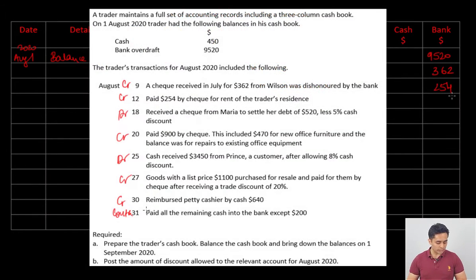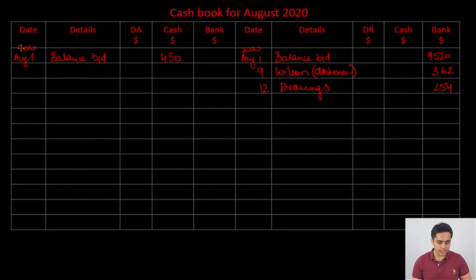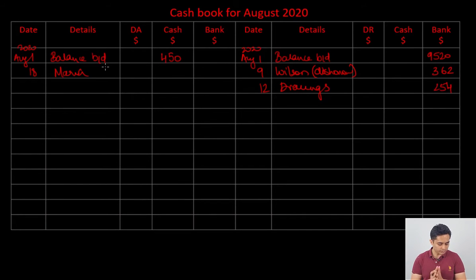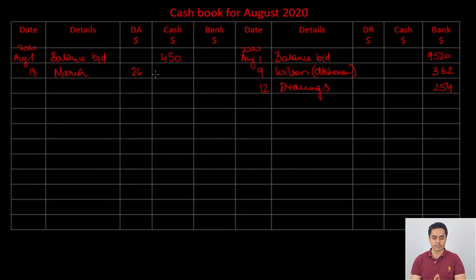August 18: received a check from Maria to settle her debt of 520, but we allowed a 5% cash discount. On the debit side of the cashbook, August 18, details — Maria. The 5% discount on 520 gives a discount allowed amount of 26, so the net amount received by check is 520 minus 26 = 494. Enter 494 in the bank column and 26 in the discount allowed column.